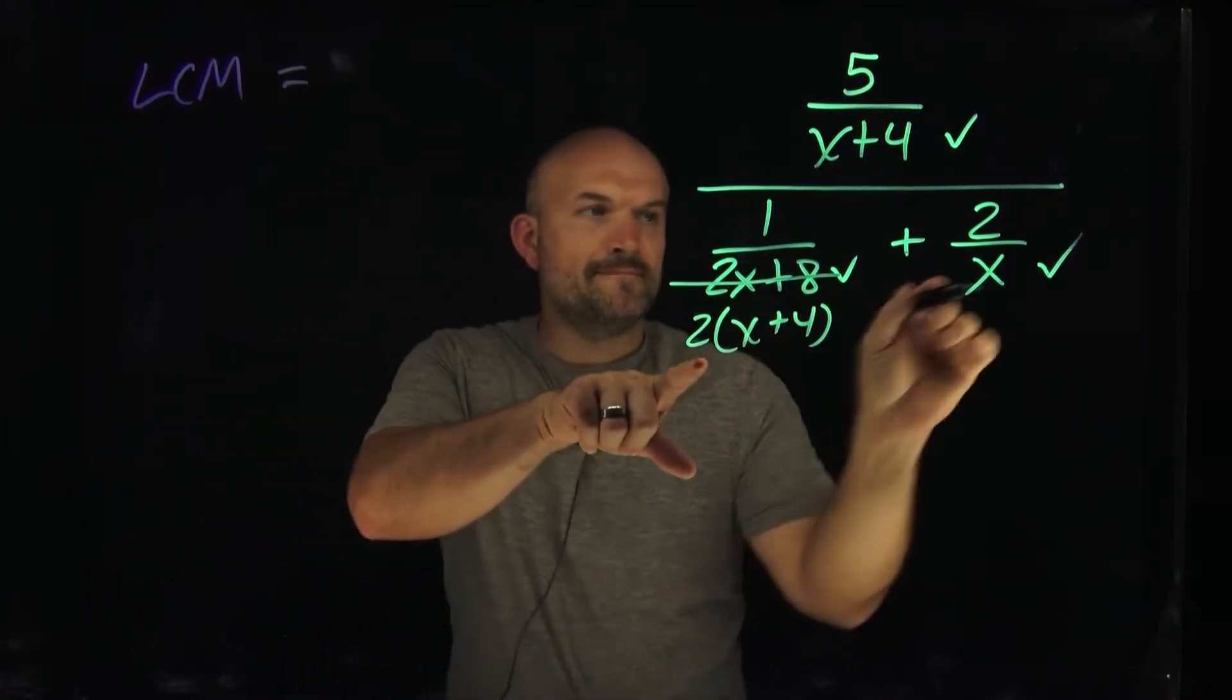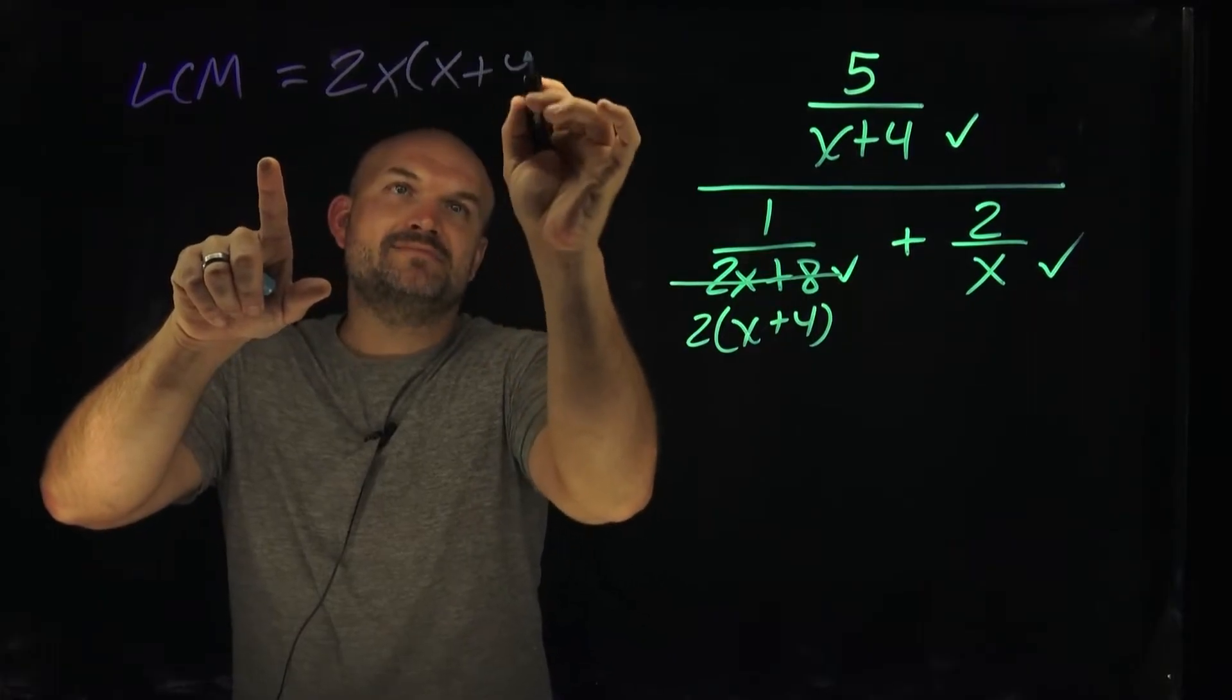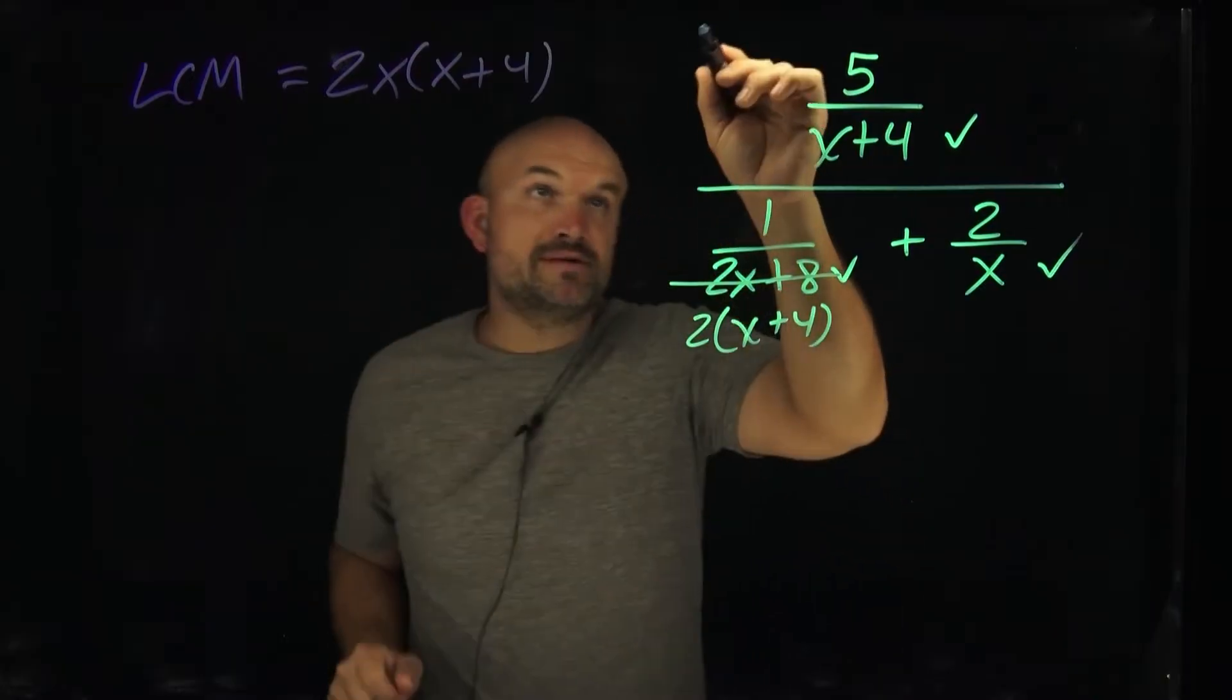So we have 2 times x plus 4. And then what else could I multiply by? An x, right? So I could rewrite my least common multiple as 2x times x plus 4. Again, I don't need to apply this twice. So I'm just going to put brackets here.